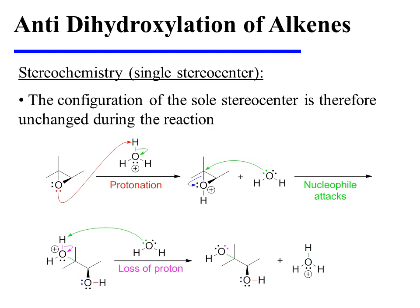Notice that this attack takes place at a carbon that is not a stereocenter. As the carbon-oxygen bond drawn in blue is broken open, there is no change whatsoever to the single stereocenter in the reactant. The oxonium ion that is formed loses a proton to the medium, and the product contains a single stereocenter with the same configuration as was found in the reactant.